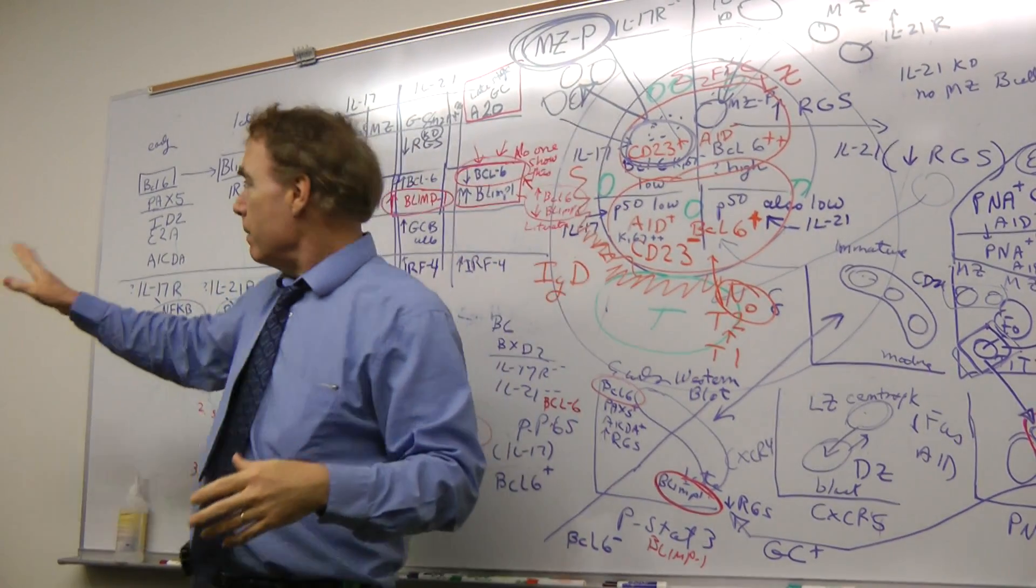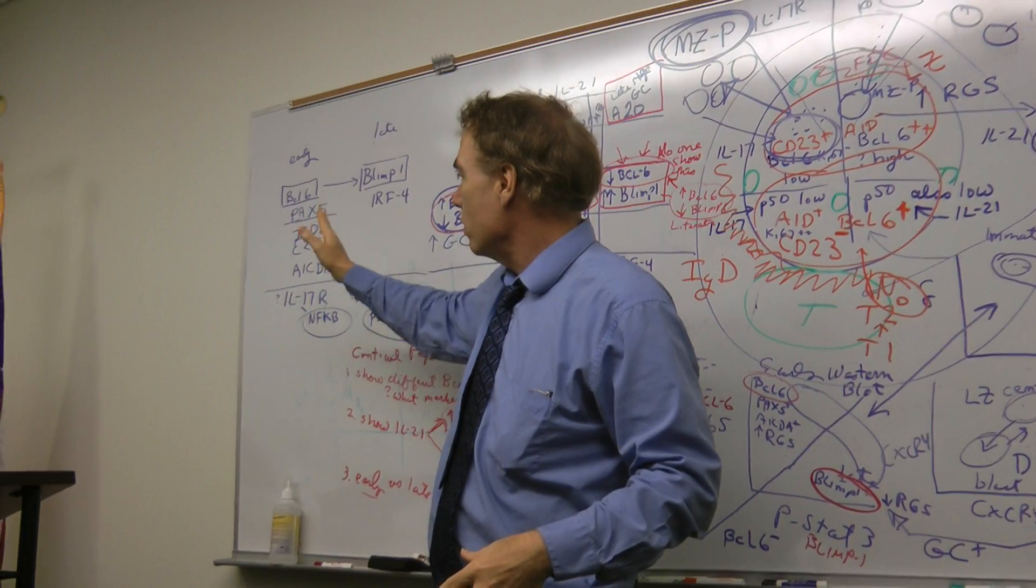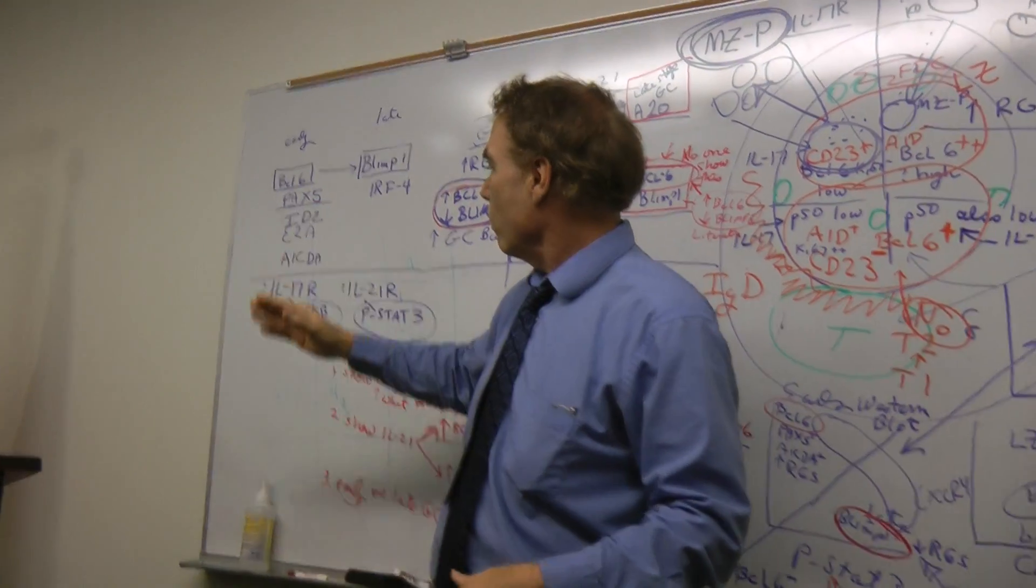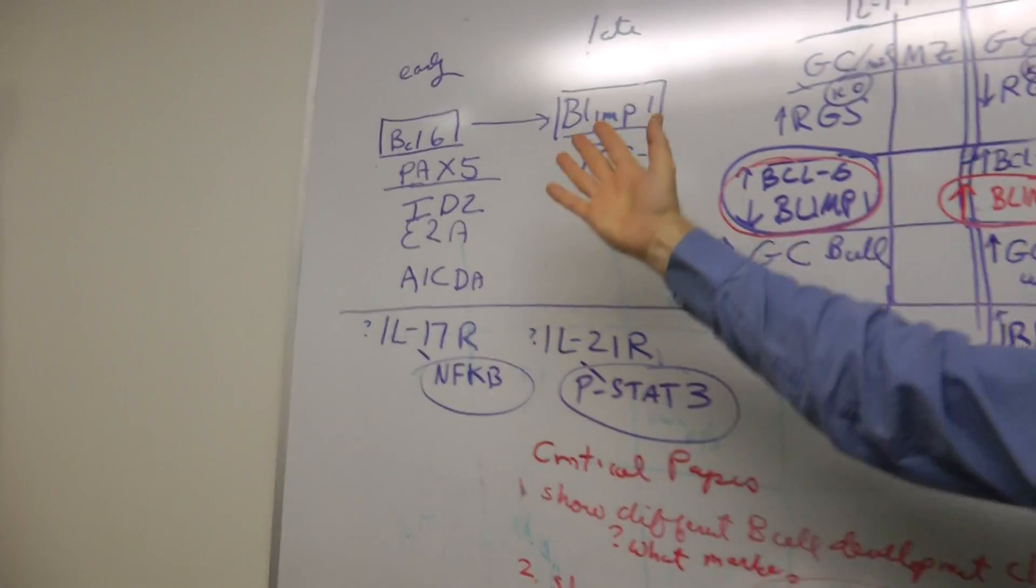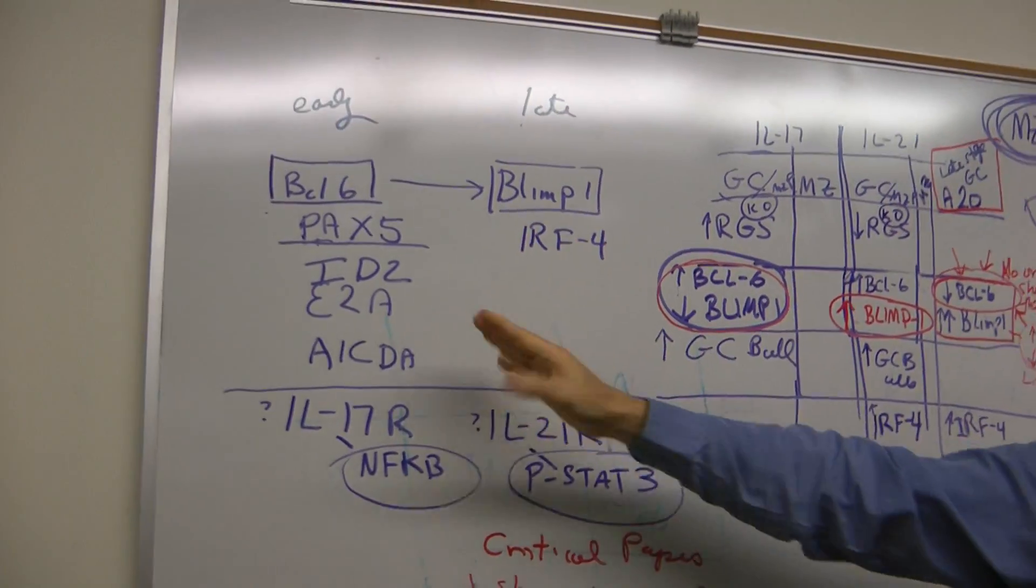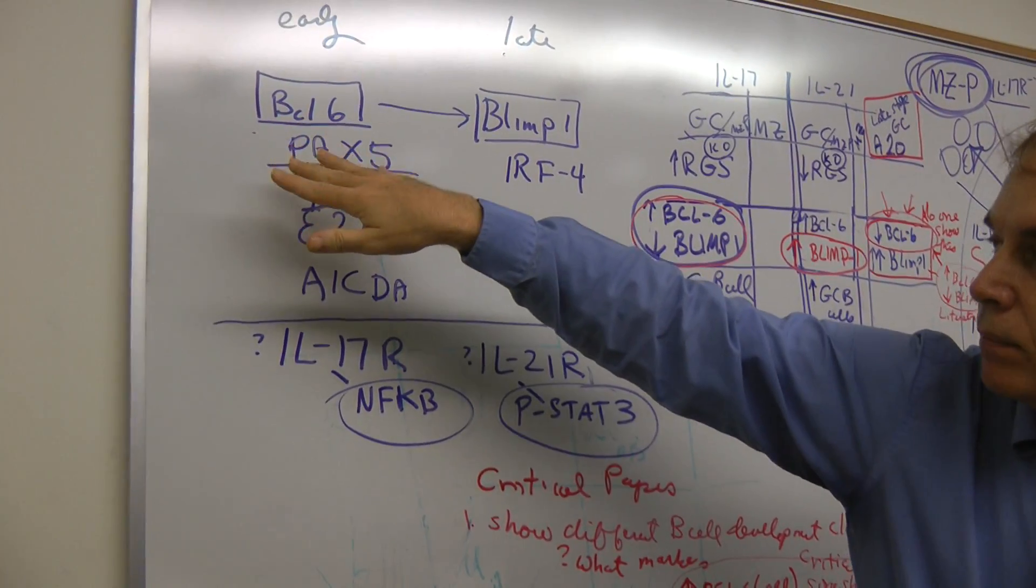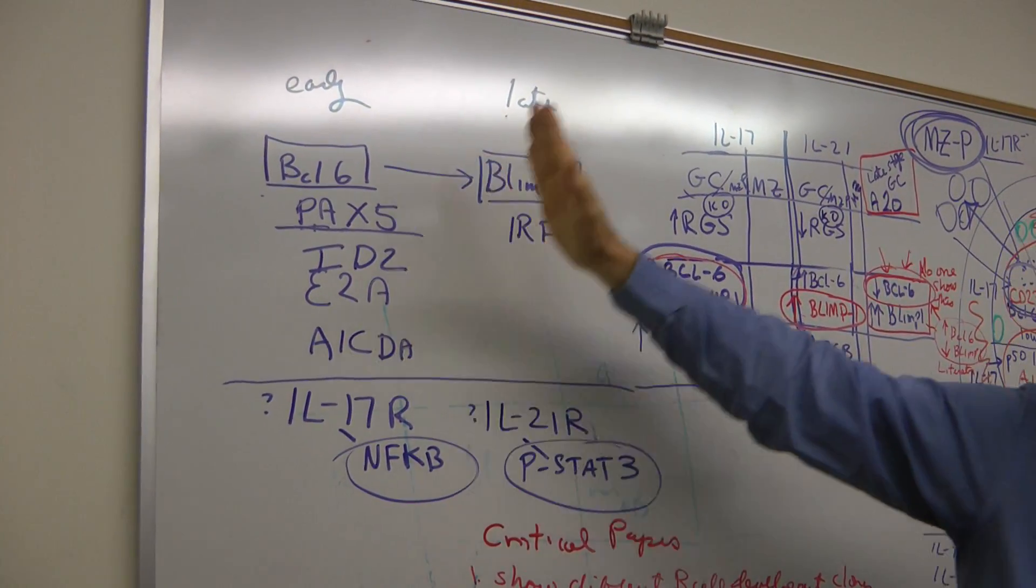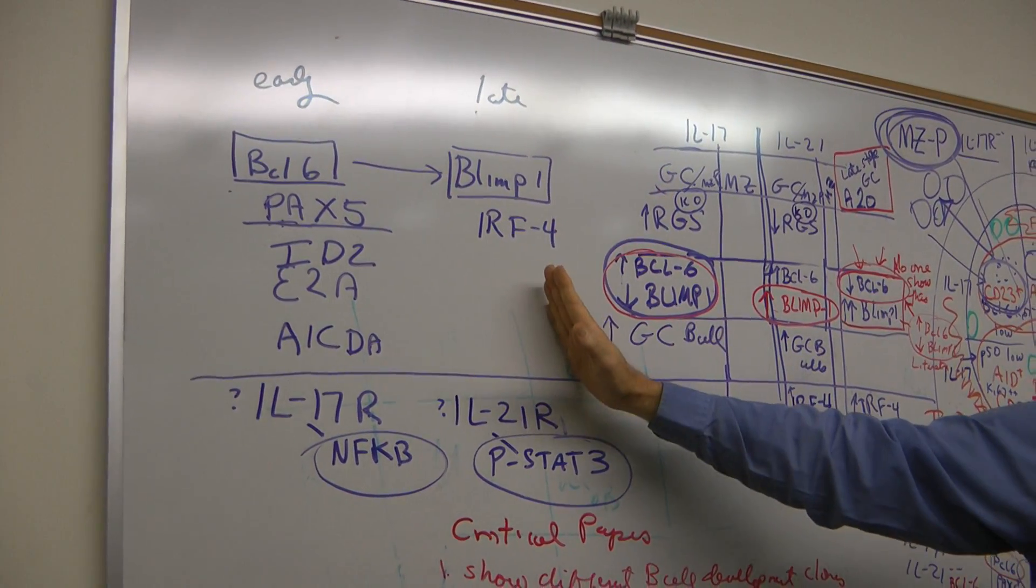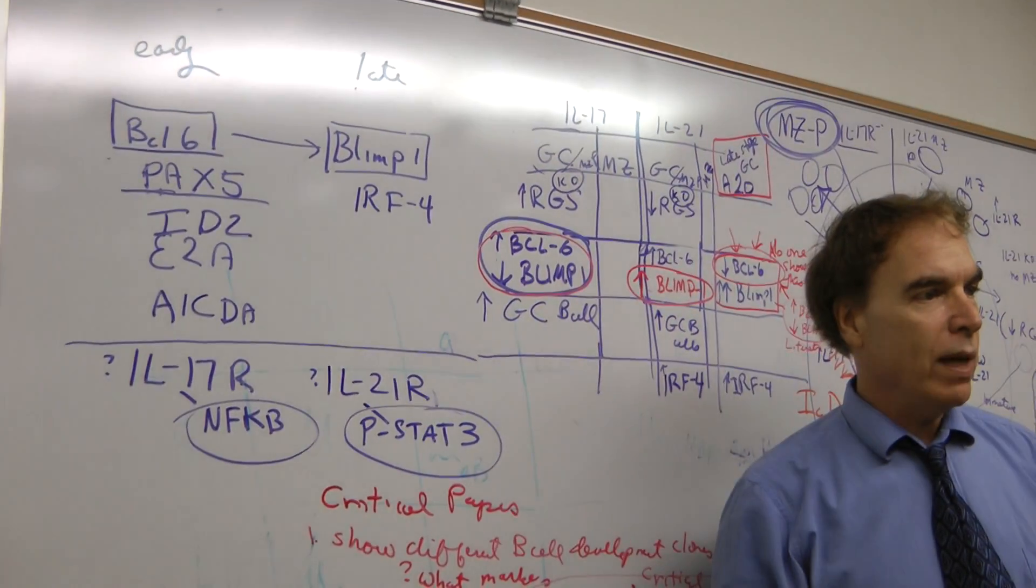There's some of these factors we've been looking at. We've tried PAX5, ID2, E2A, IRF-4. We're trying to put them under certain major transcription factors. But actually some may be the ones that are light zone, dark zone, and then late or secretory B cell. We need to find that switch factor.